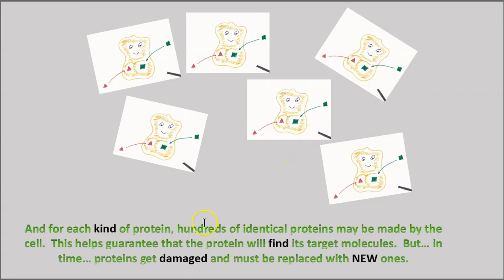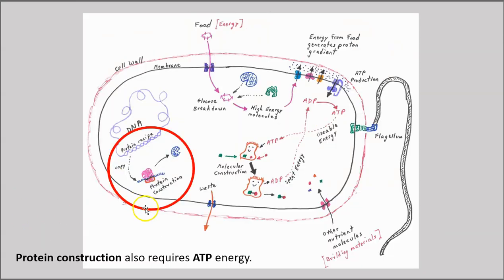But in time, proteins get damaged and must be replaced with new ones. The cell has a solution to that problem. Each and every protein in the cell has a recipe for its construction stored in DNA. So the cell can access that recipe and build new proteins when needed. Now that construction process, by the way, also requires ATP energy.